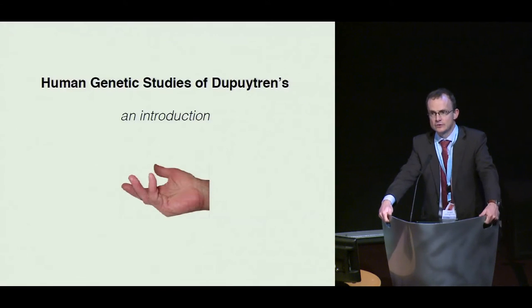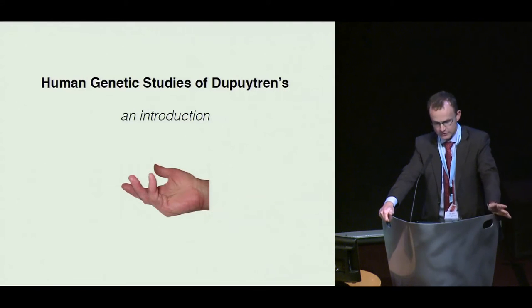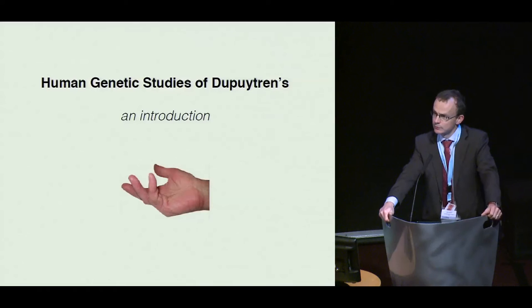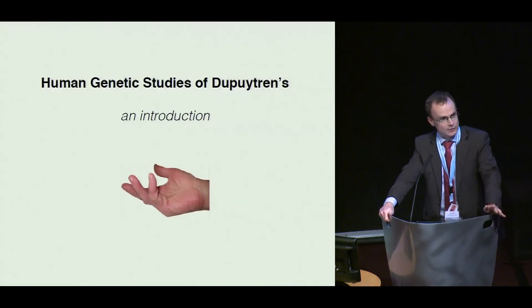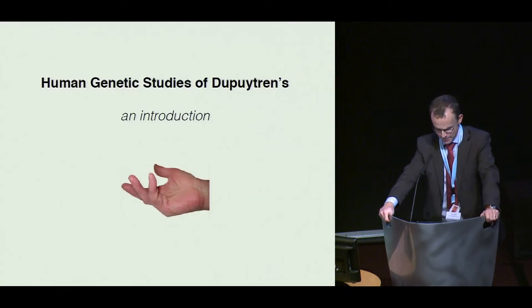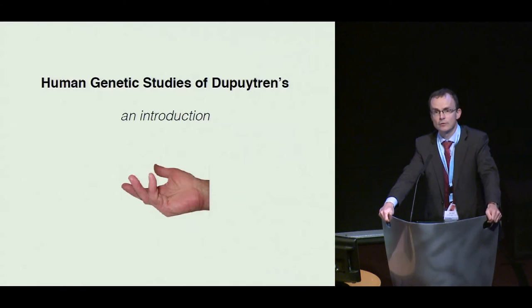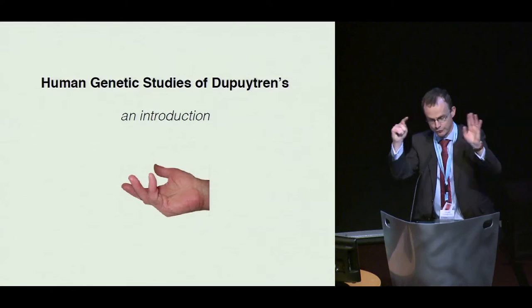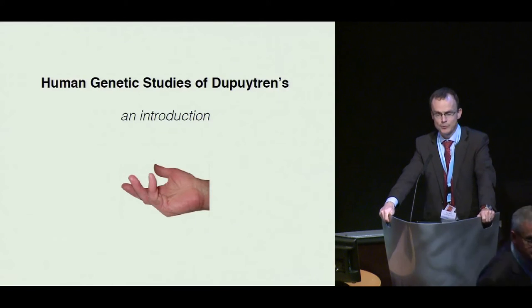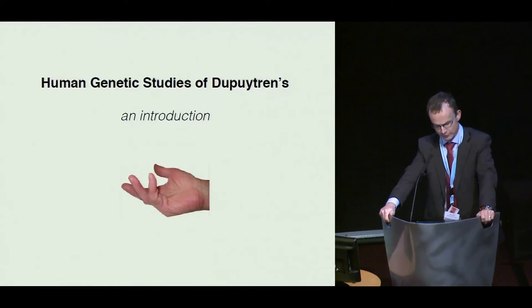Today's topic for me is human genetic studies of Dupuytren's, and it's really an introduction — so it will be light, I hope. It will be easy to digest after a meal. It's an introduction to lead into the other talks that will follow after me, and they will speak about real things. So I will just sketch a framework of genetics and hope you have some appreciation of it afterwards.